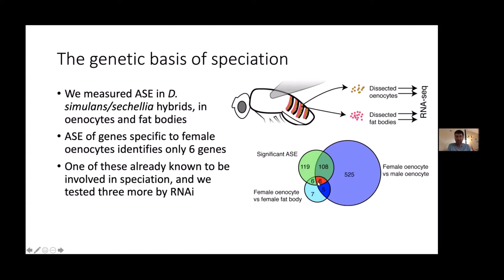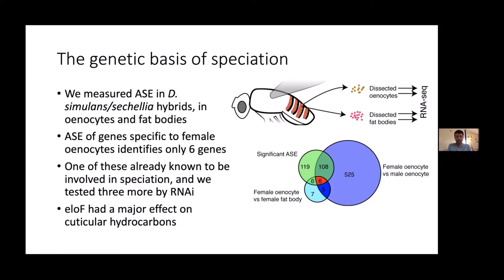Looking at ASE alone, we see a few hundred genes — not very useful for narrowing candidates. But looking at genes with ASE specific to the female enocytes, we end up with only six genes, a much more manageable number. One was already known to be involved in fly speciation — a nice positive control. Three had annotations suggesting involvement in hydrocarbons, and we tested these three by RNAi. One of them, called ELO-F, had a really dramatic effect on the profile of cuticular hydrocarbons when knocked down.